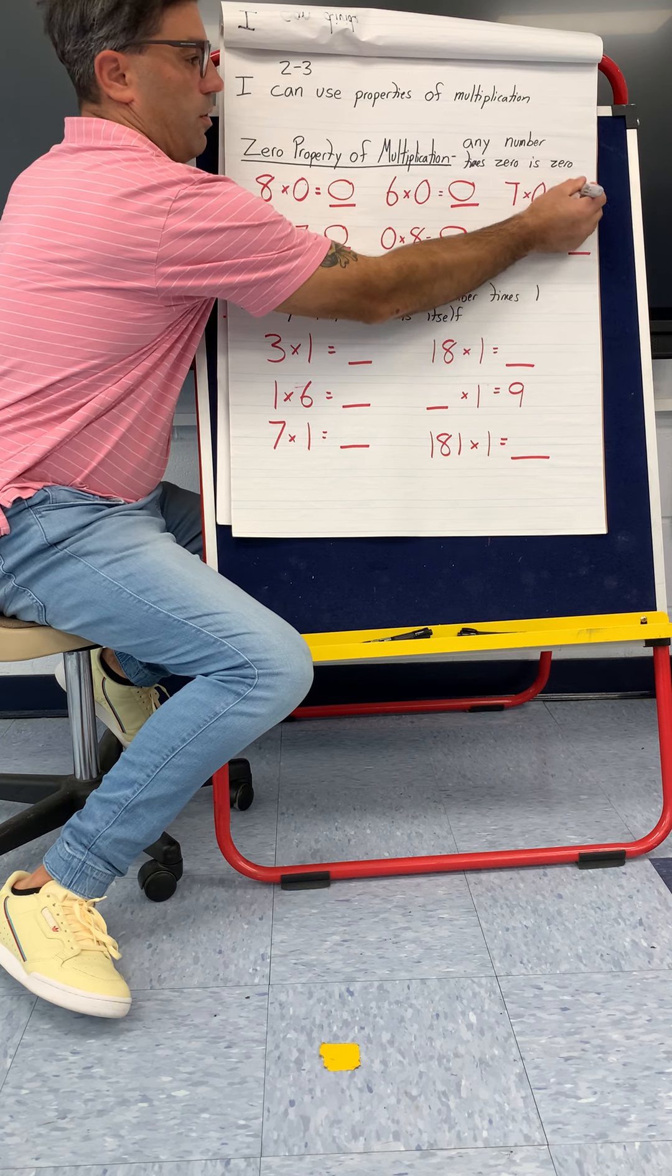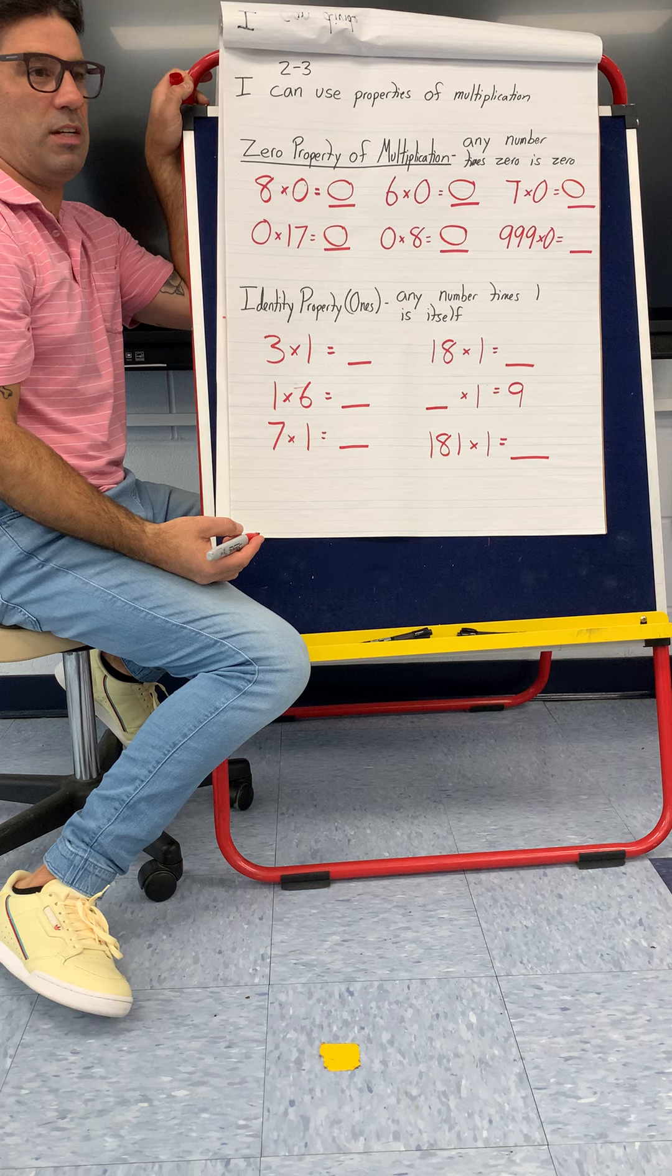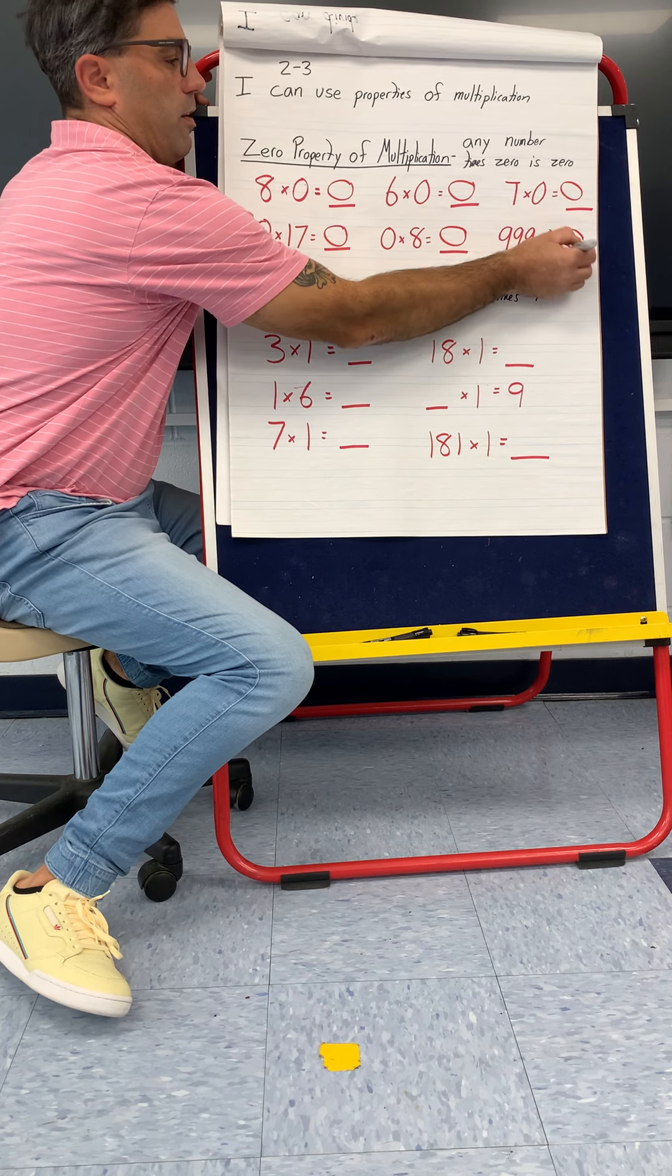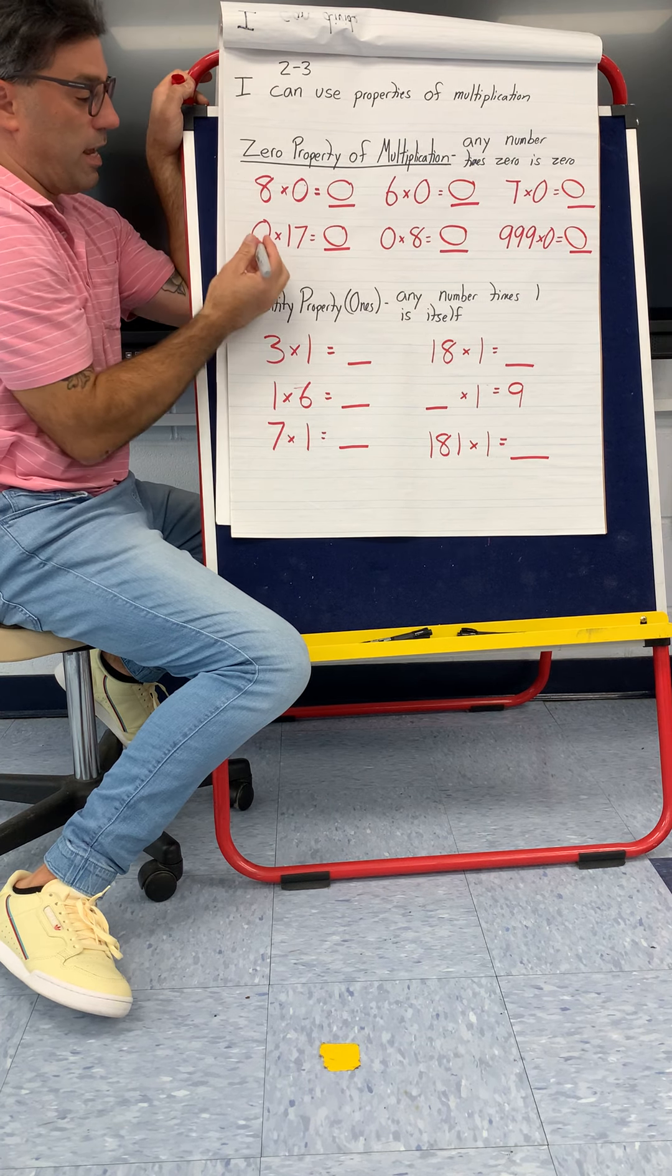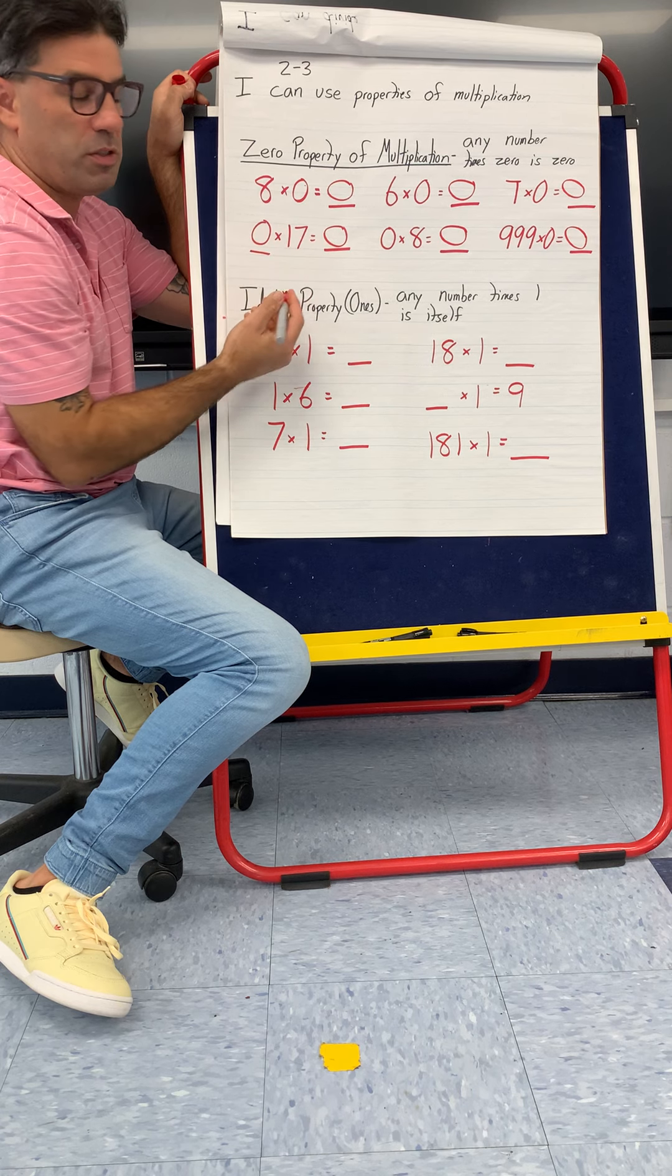Six times zero is zero. Zero times eight is zero. Seven times zero is zero. Nine hundred and ninety-nine times zero is zero.